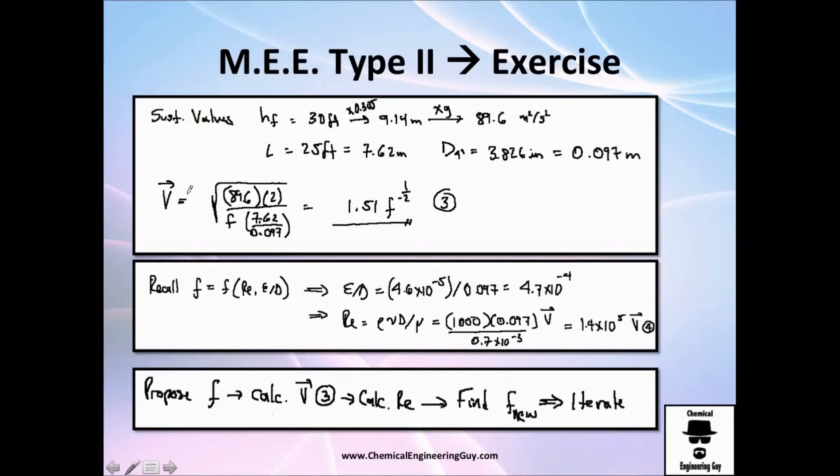And you get that velocity equals to this value. If you substitute every data, you have HF here. This two is constant. I got the length and divided by diameter. The length, recall, is 25 feet, about 7.6 meters. And I got this equation, equation number 3.